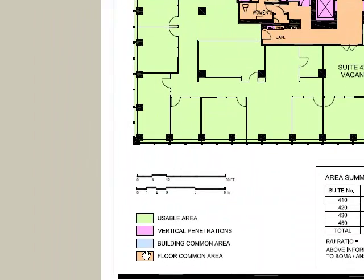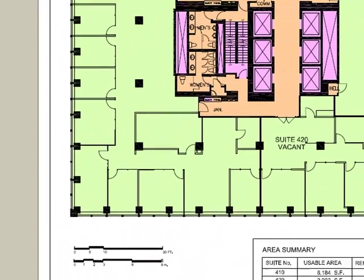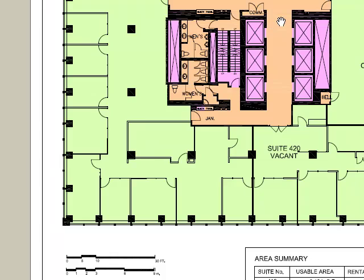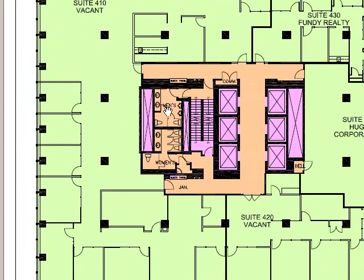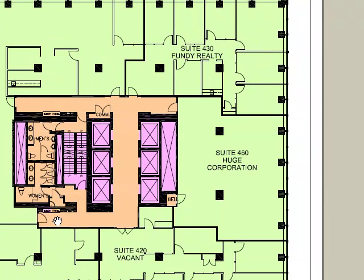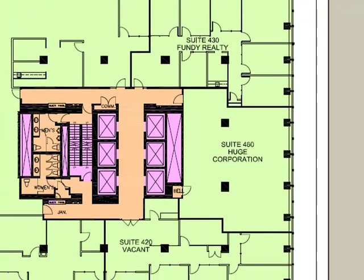Floor common area, shown in peach, indicates elevator corridors, washrooms, electrical and maintenance rooms — areas used by all tenants on that floor. These areas are then proportionately shared by all tenants on this floor.